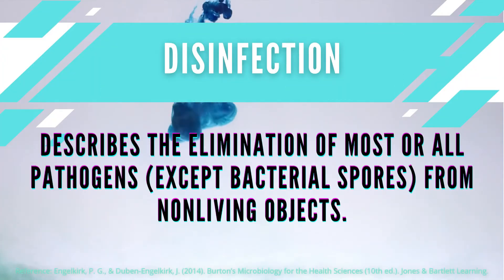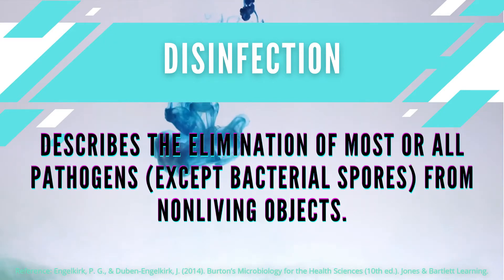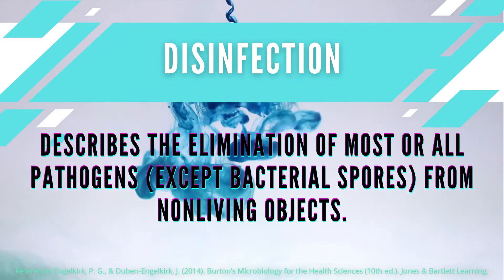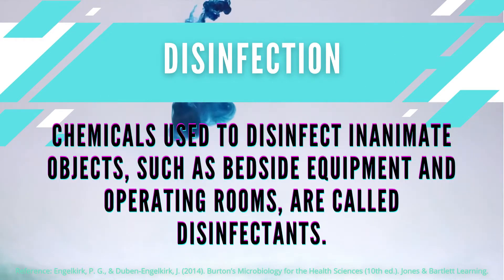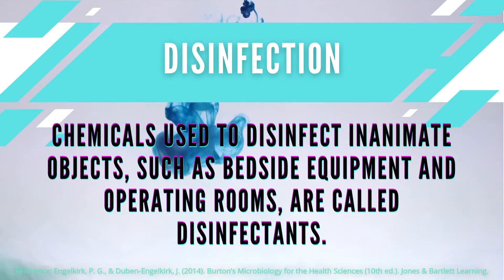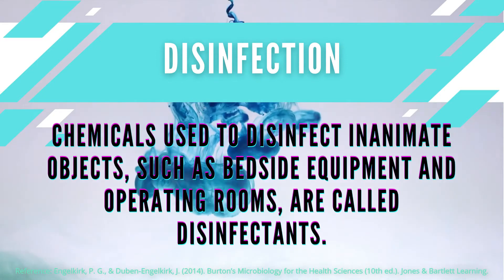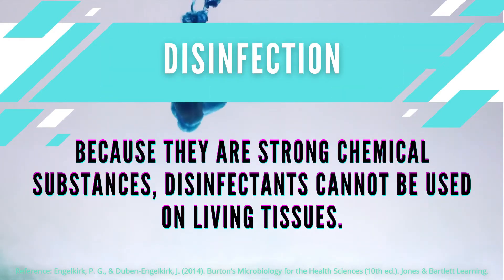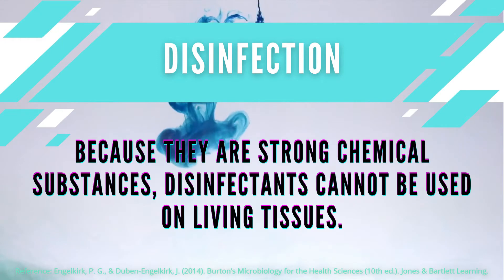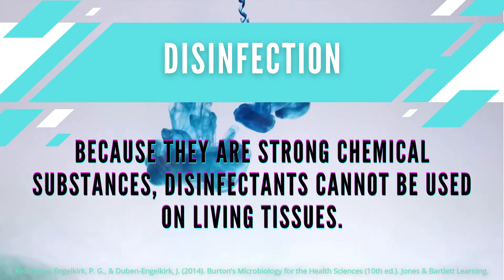The next way of inhibiting microbes involves disinfection. Disinfection describes the elimination of most or all pathogens except bacterial spores from non-living objects. Chemicals used to disinfect inanimate objects such as bedside equipment and operating rooms are called disinfectants. Because they are strong chemical substances, disinfectants cannot be used on living tissue.